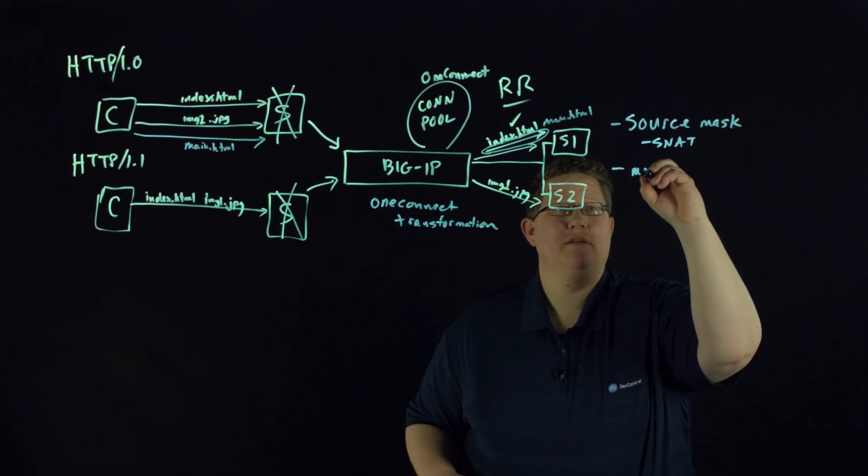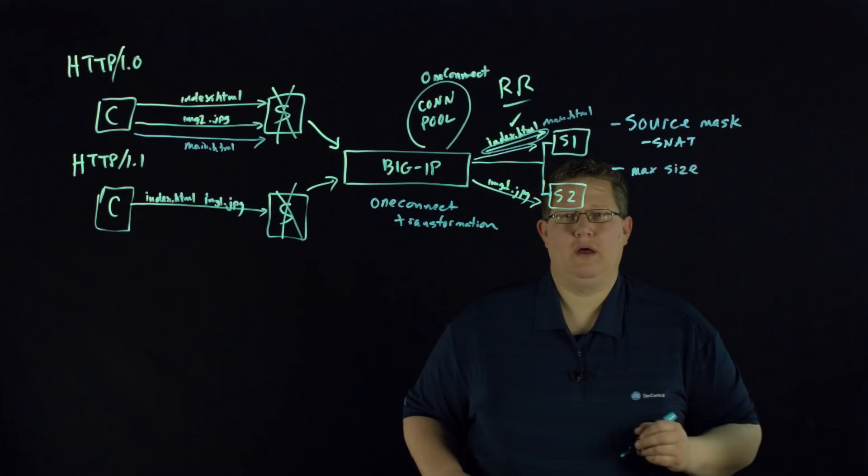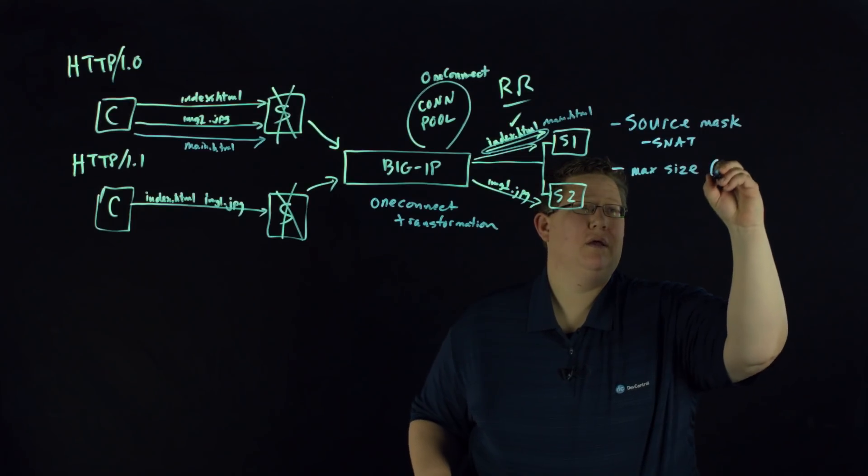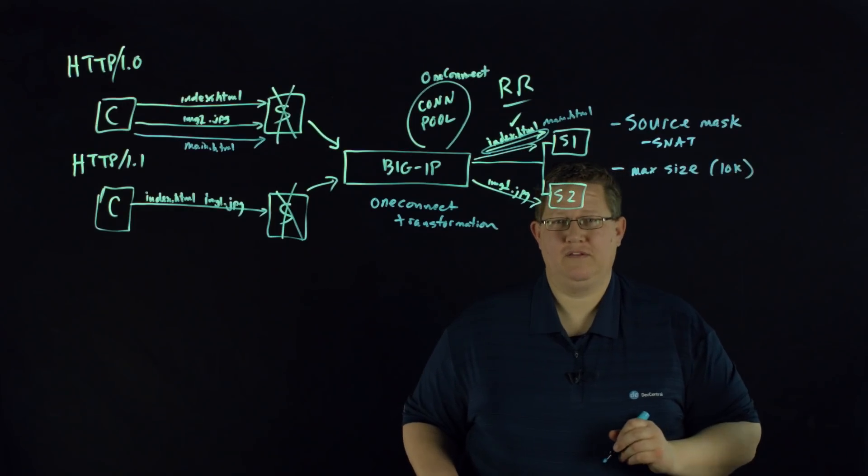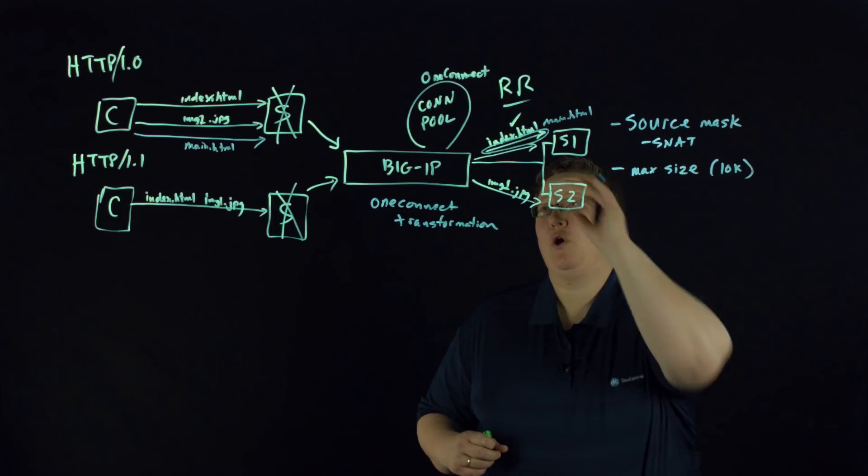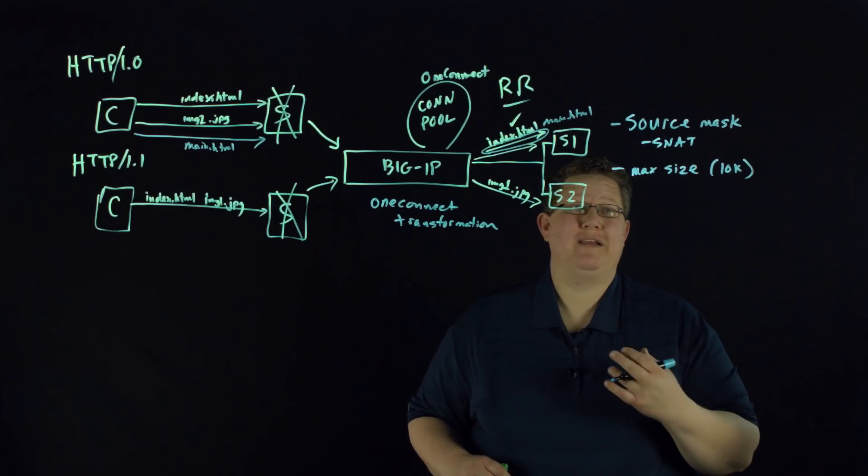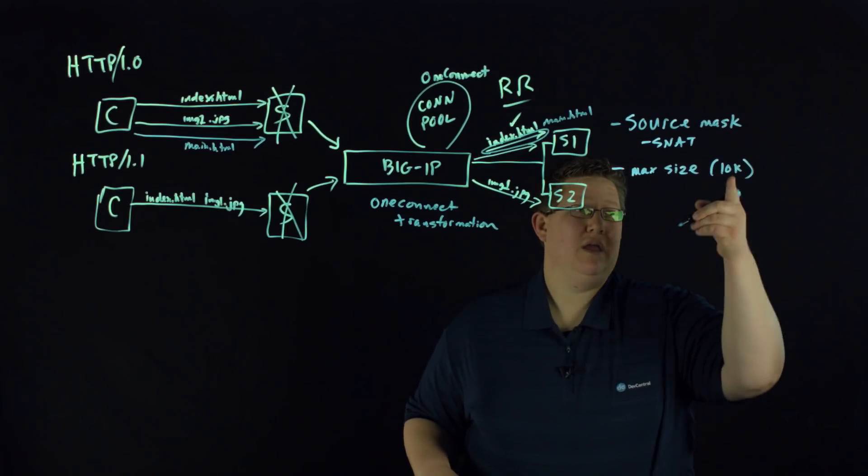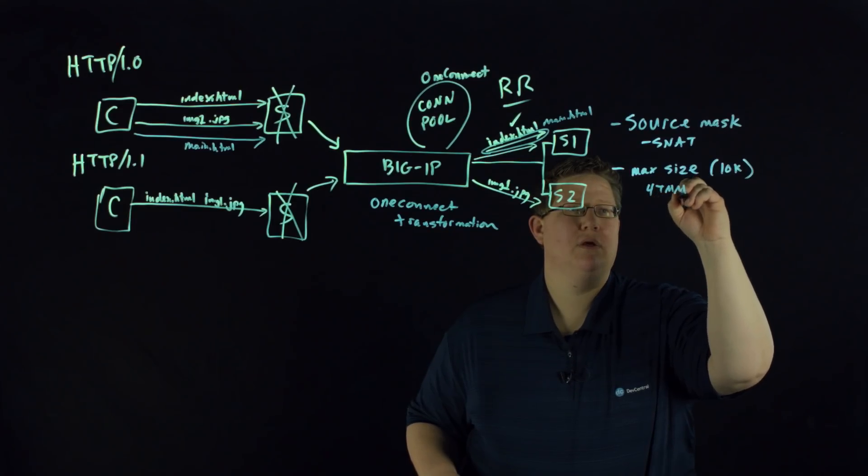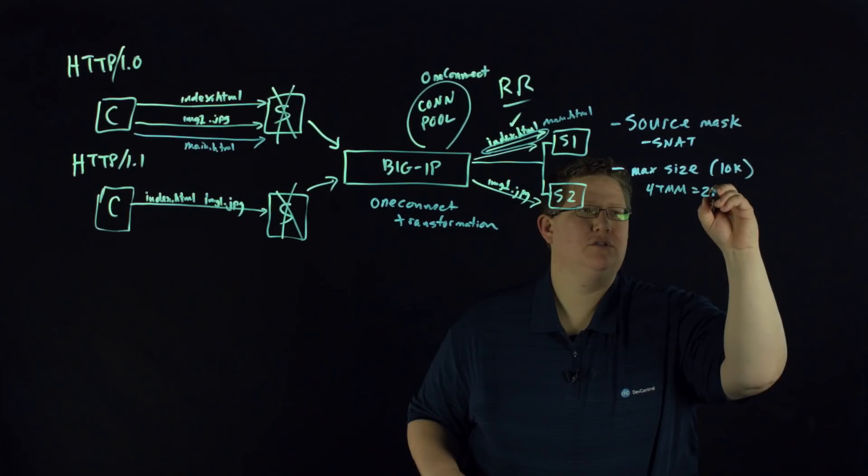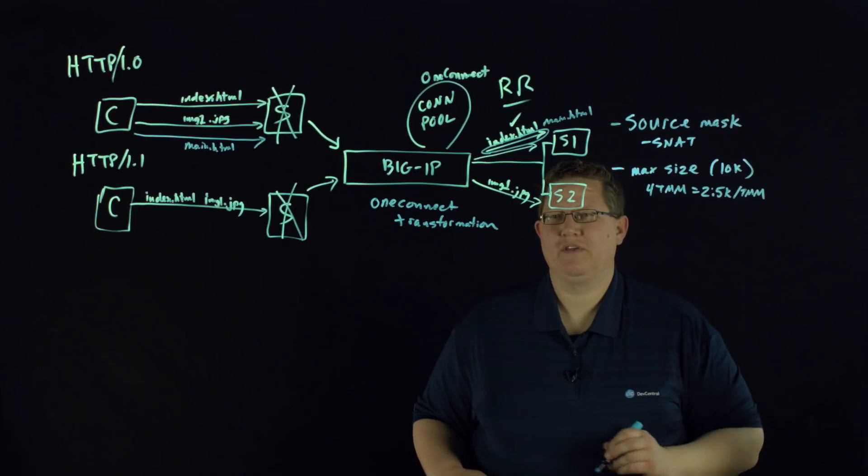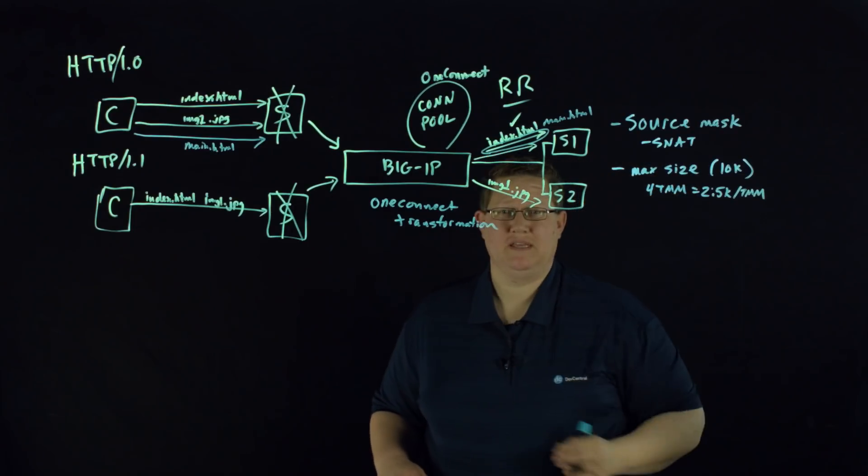Max size - this is the size of the pool for connection reuse. The default here is 10K. That's the max number of server-side idle connections that BigIP will hold in this reuse pool. That number is divided by the number of TMMs. So if we have the default of 10K and you have four TMMs, then you're 2.5K per TMM as far as the number of connections that will sit in the idle state.